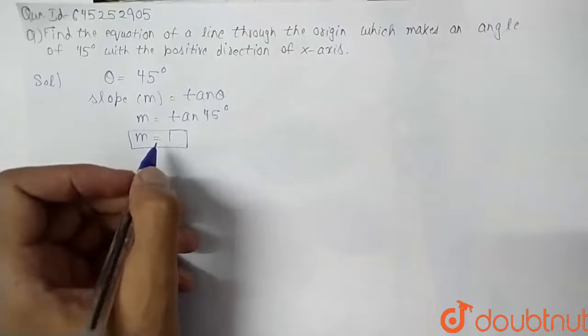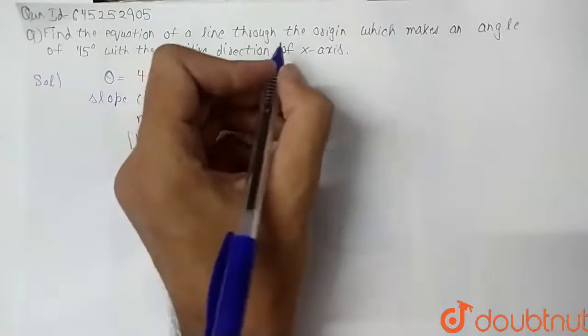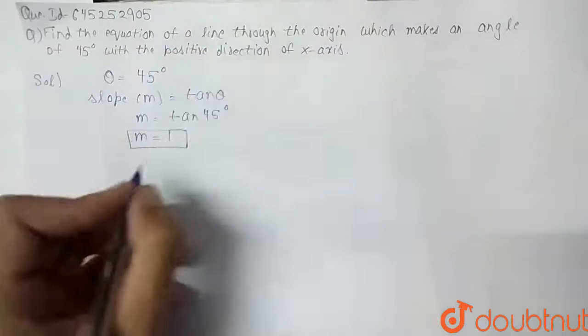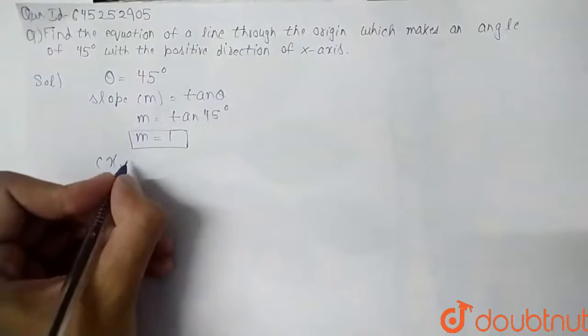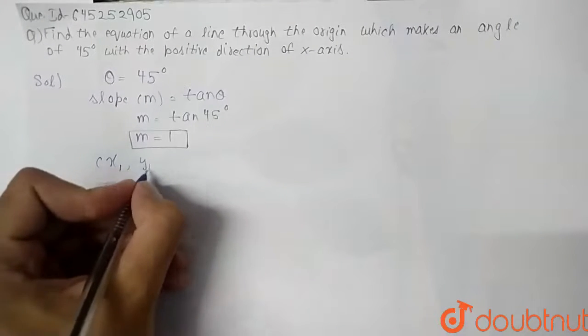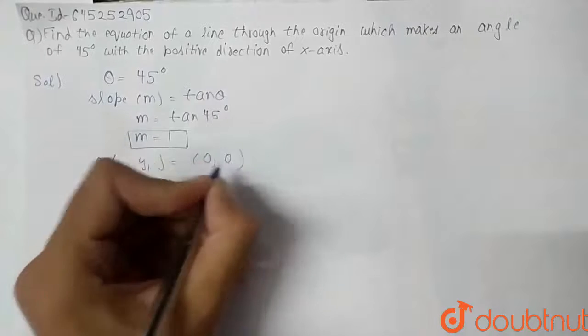Now we can say that since this line passes through the origin, we have x1, y1 coordinates are (0, 0).